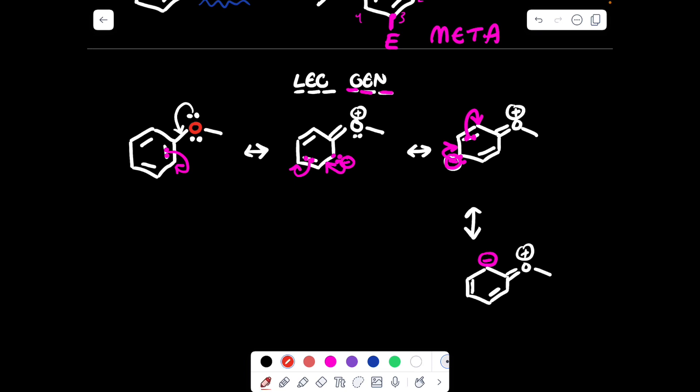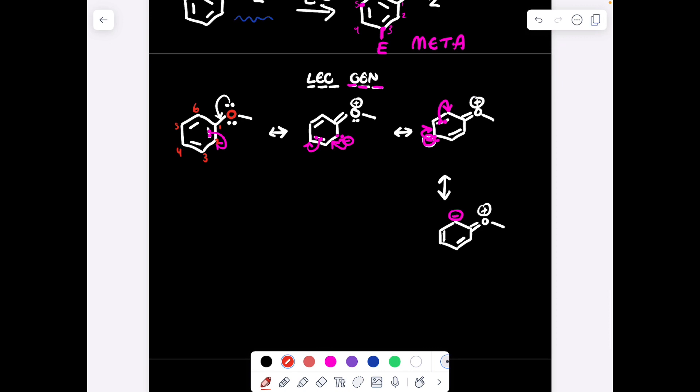If I arbitrarily label these carbons, like carbon one, two, three, four, five, six, and I go back to my original structure, but I consider this labeling in all of the intermediate side. One, two, three, four, five, six.